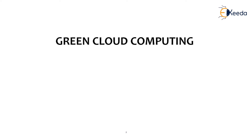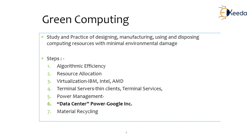The first metric was developed by the Green Grid, called Power Usage Effectiveness, or PUE, to measure the effectiveness of a data center. The reminder is that organizations need to follow green cloud computing concepts, which include designing, manufacturing, using, and disposing of computing resources with minimum environmental damage. Steps include algorithm efficiency, resource allocation, virtualization by IBM, Intel, and AMD, then terminal server or thin client and terminal services, power management, data center power as adopted by Google, and material recycling.